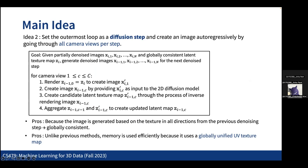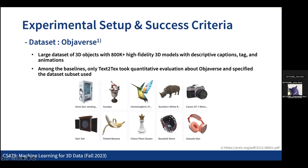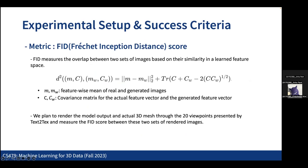For the experiment, we plan to use an Objaverse dataset. The dataset used by Text2Tex for evaluation is publicly available, so we plan to use it for a fair performance comparison. The FID score will be used as a metric, comparing rendered model outputs against real textured 3D mesh renders from multiple camera views. Thank you.